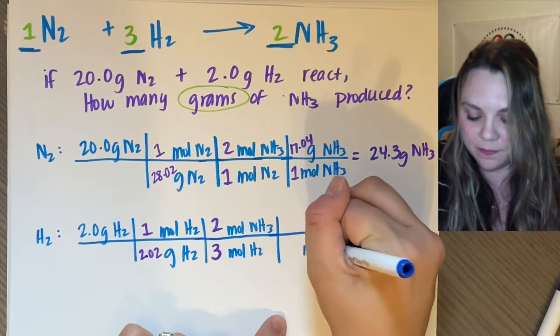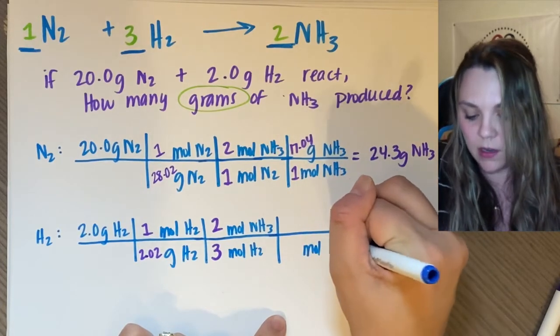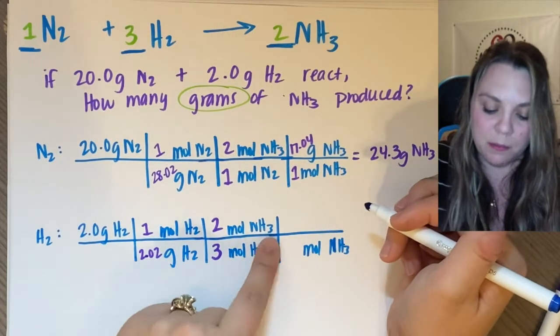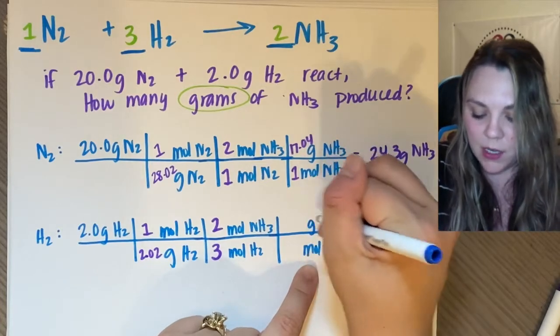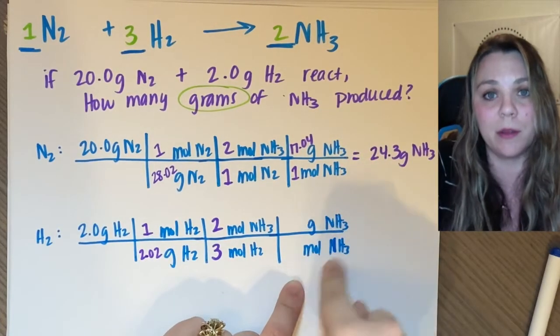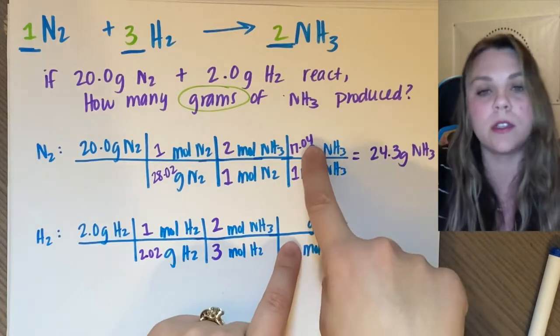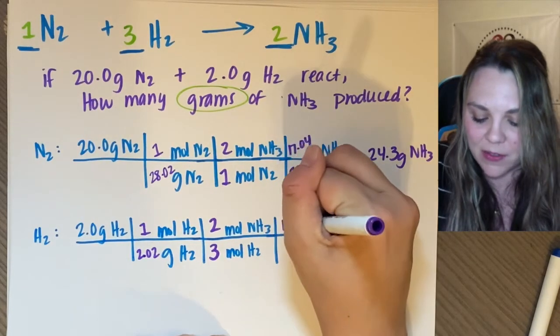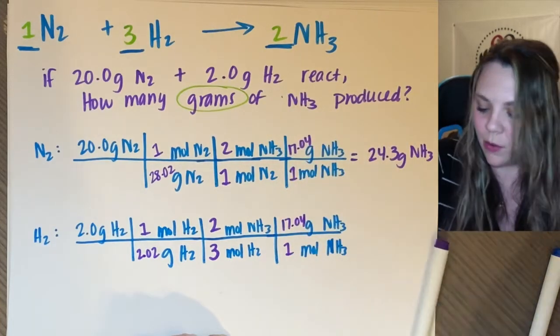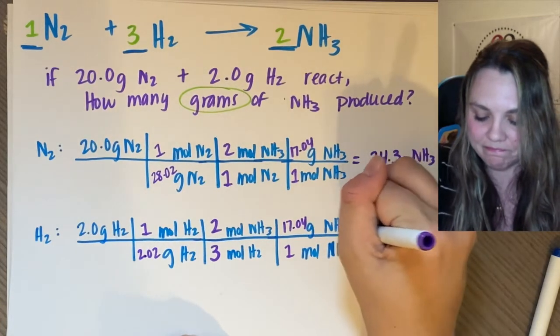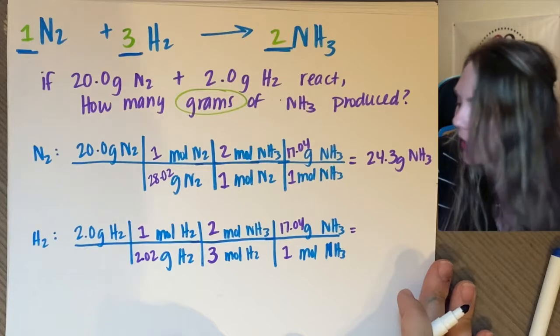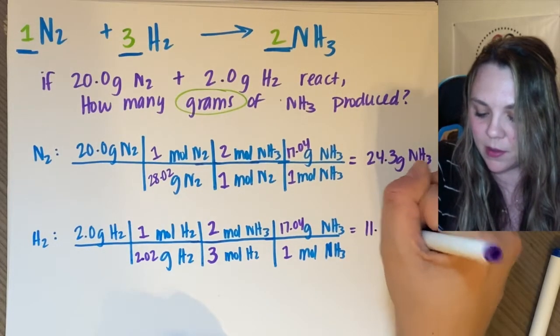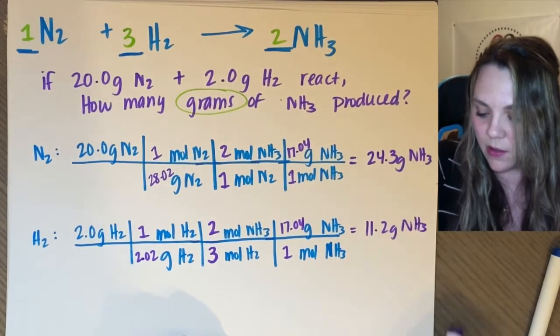And then NH3, get out of moles of NH3 and get into grams of NH3. This is the nice step of limiting reactant problems because you've already solved for your molar mass. So this will be 17.04 grams for every one mole. And plug it in your calculator and you get 11.2 grams.